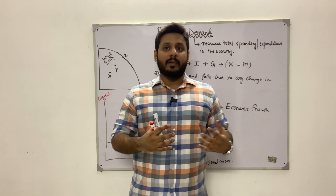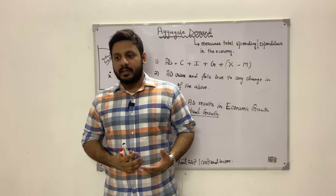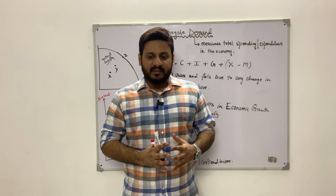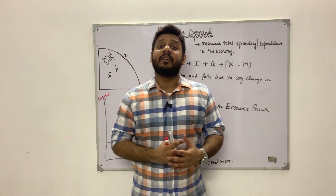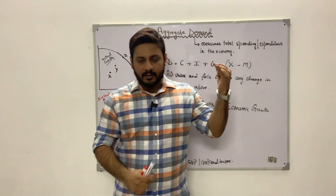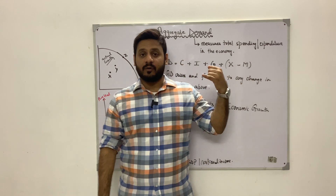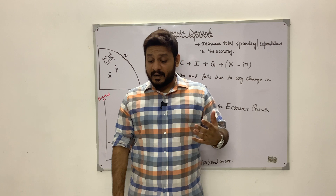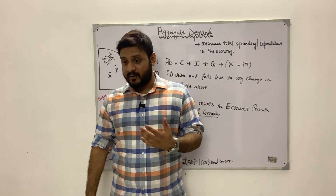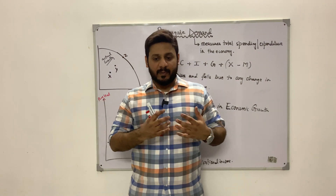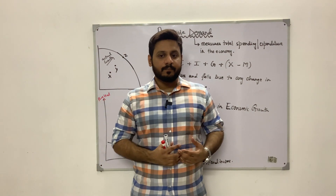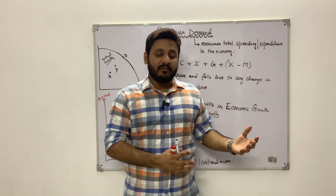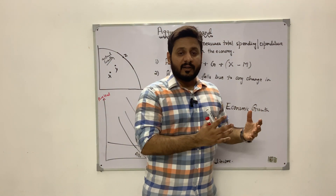When we say aggregate demand comprises total spending, we need to ask: who is spending money in the economy? That spending comes from various sources. Number one: spending by consumers in the form of consumer expenditure on their needs and wants. Then you have investment spending by firms on machinery, capital goods, equipment, and expanding factories. Then you have spending by the government in the form of government expenditure — both current and capital expenditures.